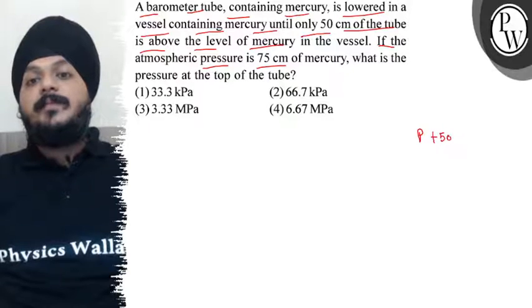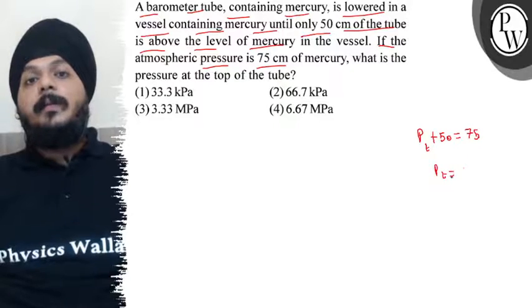Pressure at the top of the tube plus 50 equals atmospheric pressure. So the pressure at the top of the tube will be 25 cm of Hg.